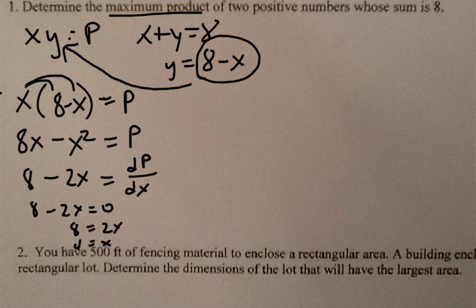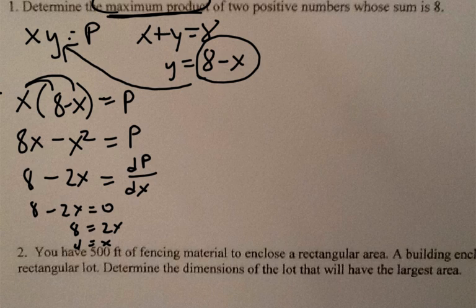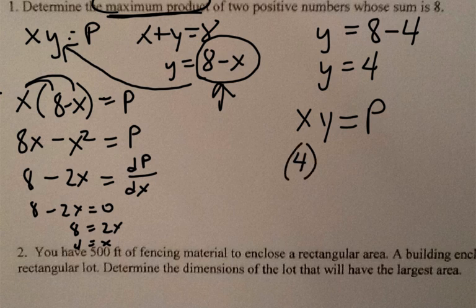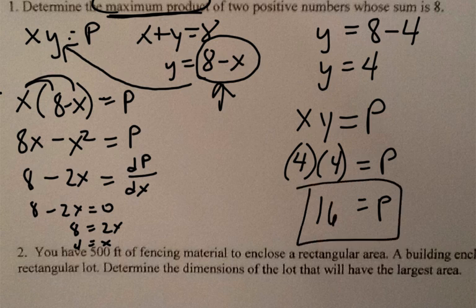Now I have x, but I also need y to determine the maximum product. Substituting back into y equals 8 minus x, since x is 4, y also equals 4. The problem asks us to determine the maximum product, so x times y equals 4 times 4, which is 16 — that's the answer. Always make sure you are answering the question asked. This problem could have just as easily asked us to find those two positive numbers.